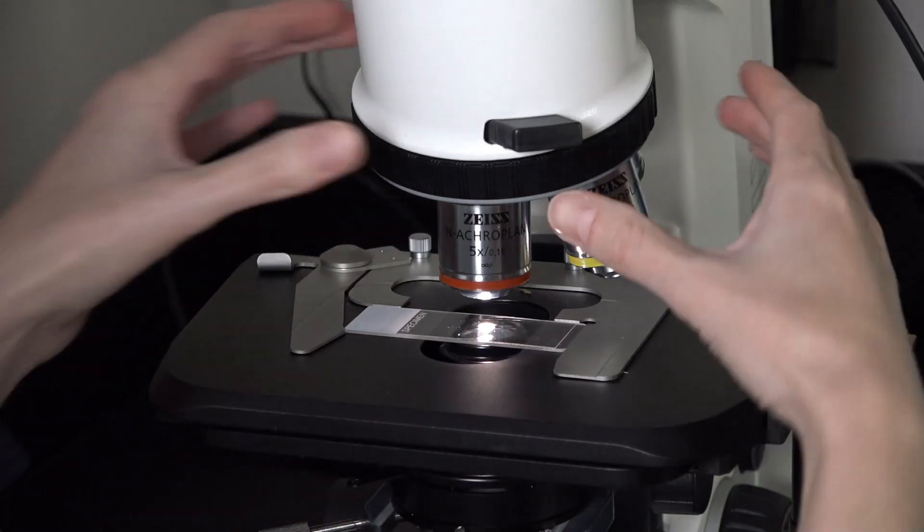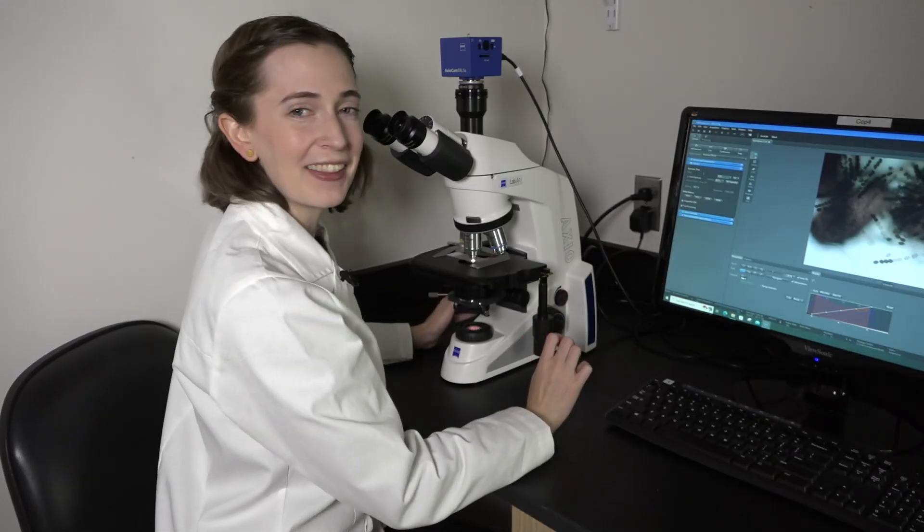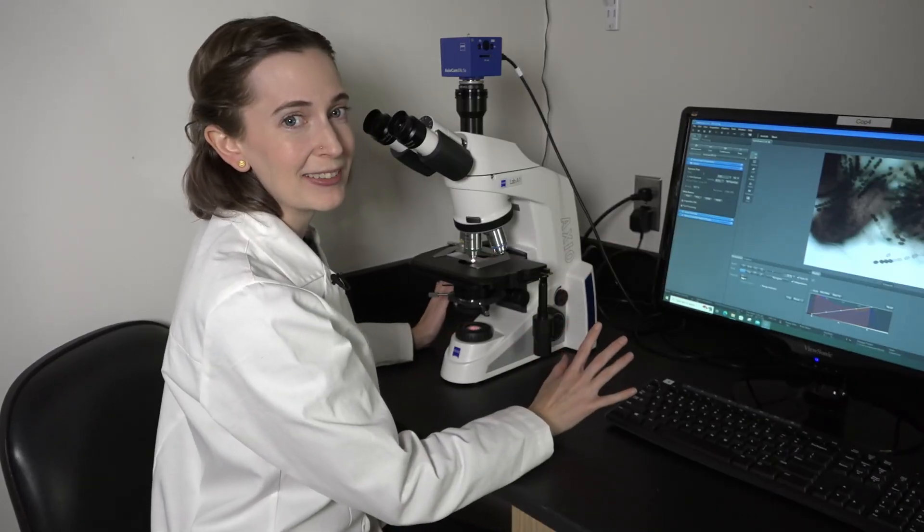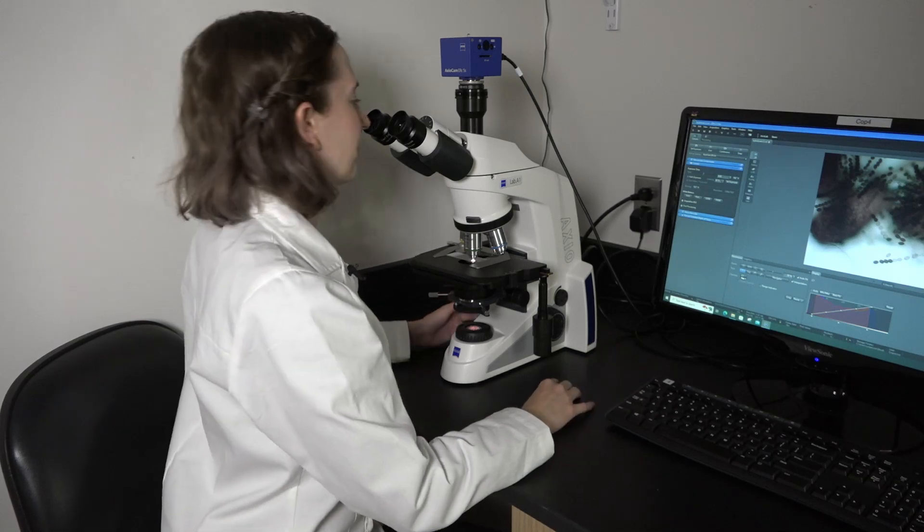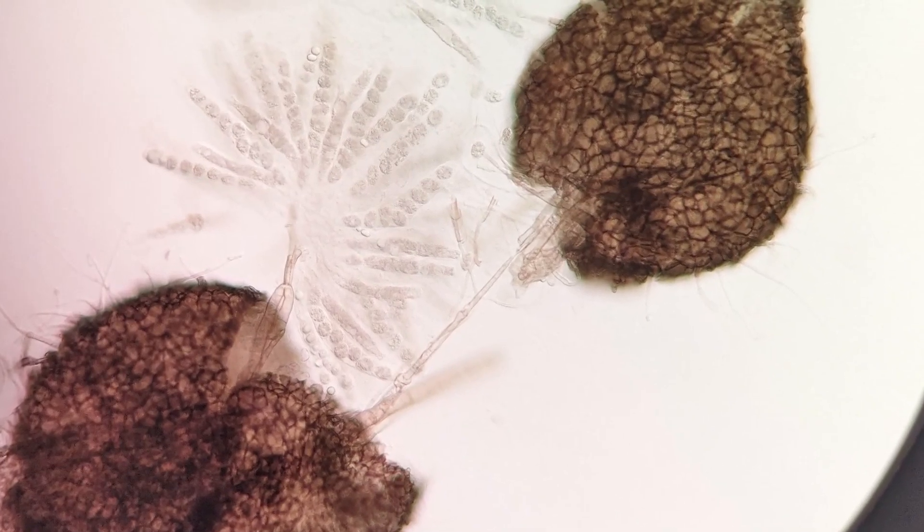Sordaria spores are very small, so I'll need a magnification of around 10 or 20x. Oh, look at all the little asci! Let's find ones that'll be ideal for the experiment. First, avoid asci that are so pale you can't tell if they're tan or black. They're not mature enough to be showing the color trait, so we can't use them.